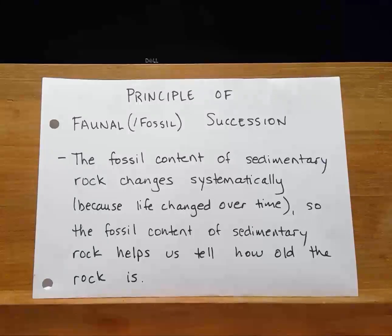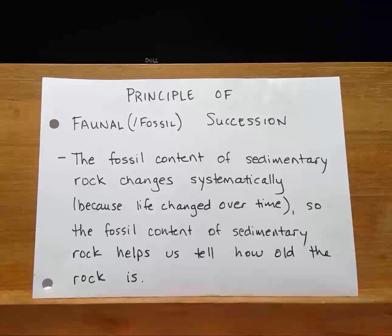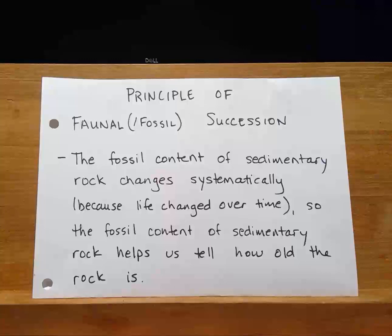Now here's a pretty important principle: the principle of faunal succession. William Smith first demonstrated back in the late 1700s through early 1800s how the fossil content of sedimentary rock changed systematically over time — this was before Charles Darwin and his theory of evolution. When we look at a stack of sedimentary rock layers containing lots of fossils, the fossil content changes over time. So we can use the fossil content of sedimentary rock layers to tell us something about when the rock was formed. Our geologic time scale, which is the second part of unit 8, uses certain major changes in fossil content to divide all of earth history into different subunits of time.